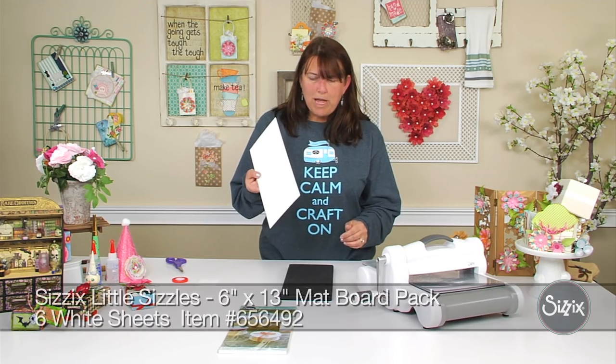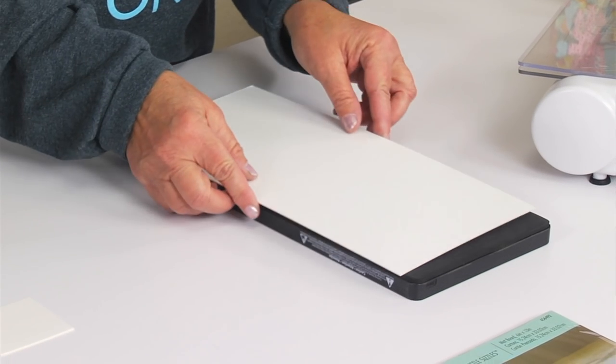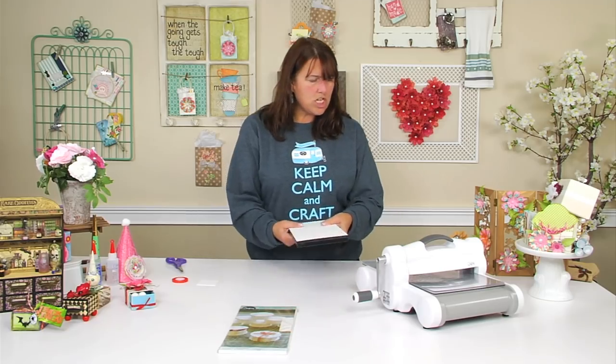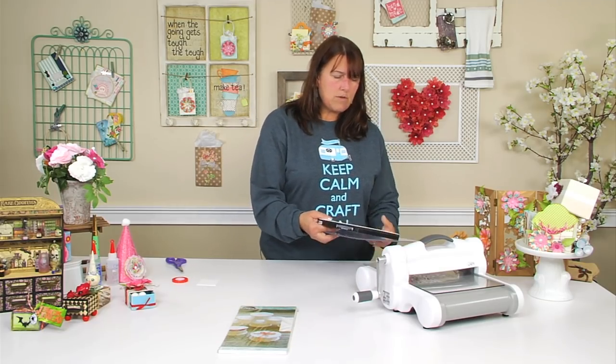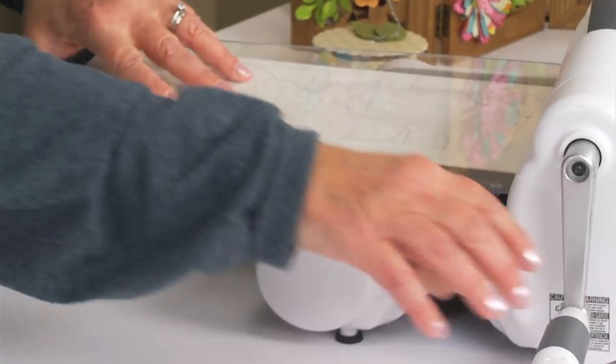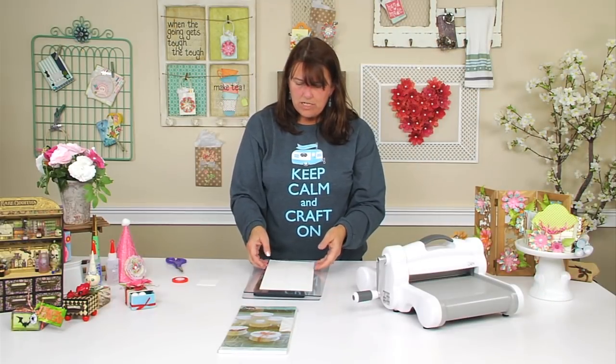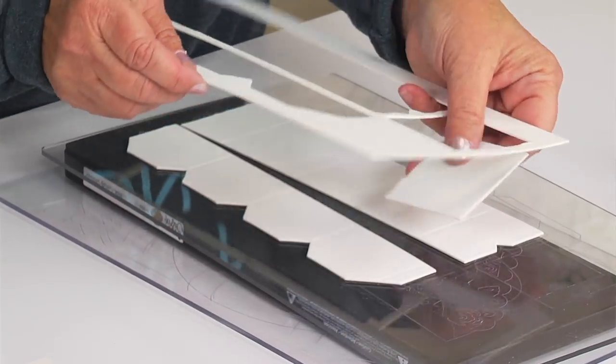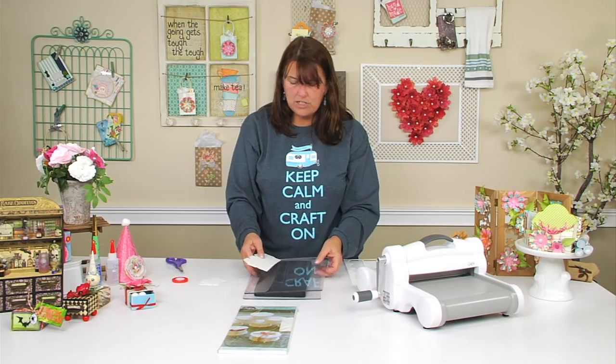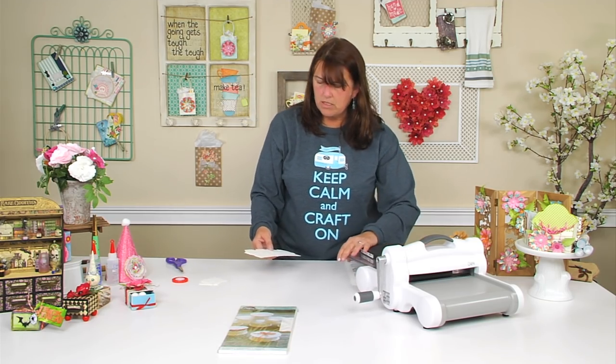I'm using white Sizzix mat board, and you're going to cover your die making sure that all areas of the die are within cutting range. Then you're going to make your Sizzix sandwich and run that through. Alright, so here's what you get. I like to put one square inside and one square outside so I cut an extra one, but you don't have to. That's optional, I just think it strengthens the box a little bit.